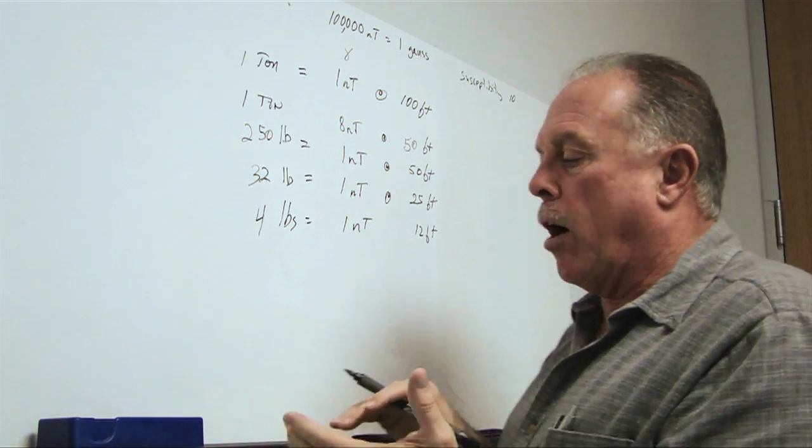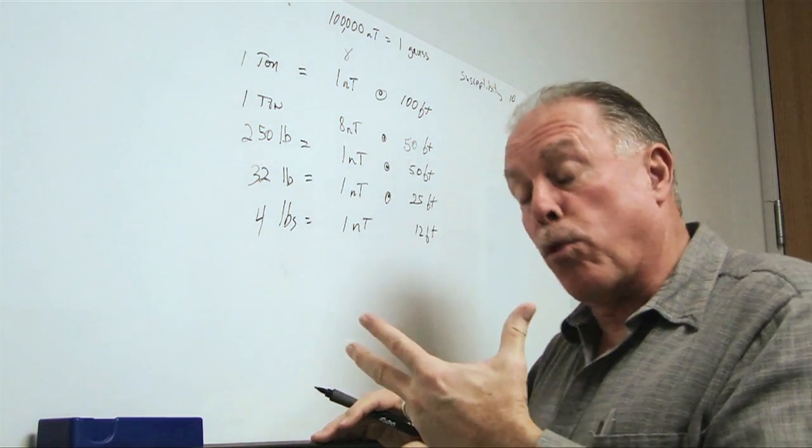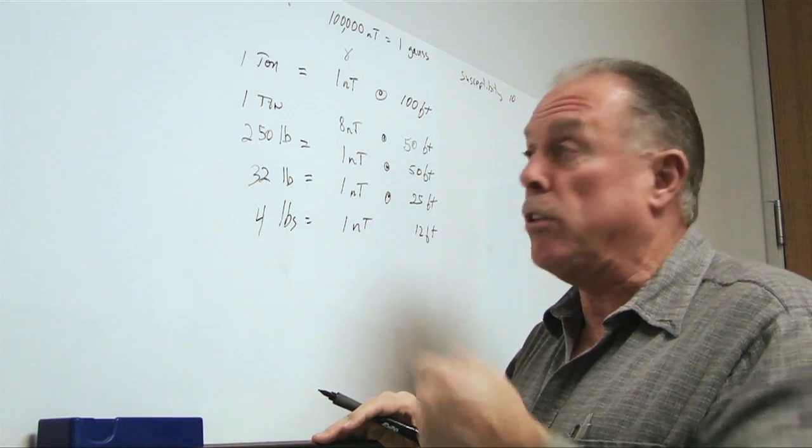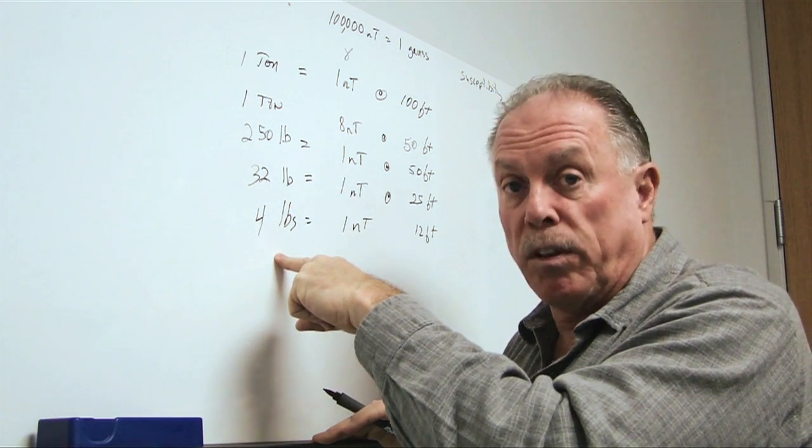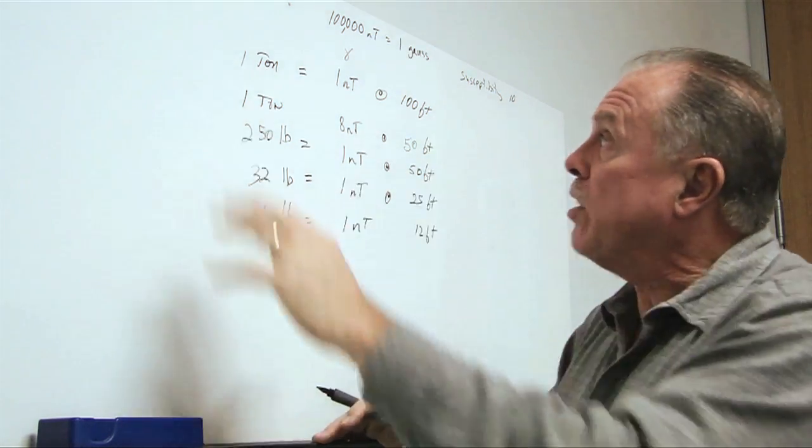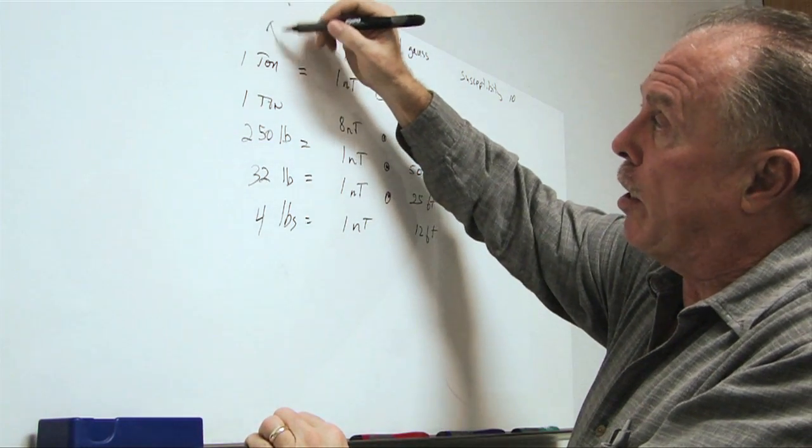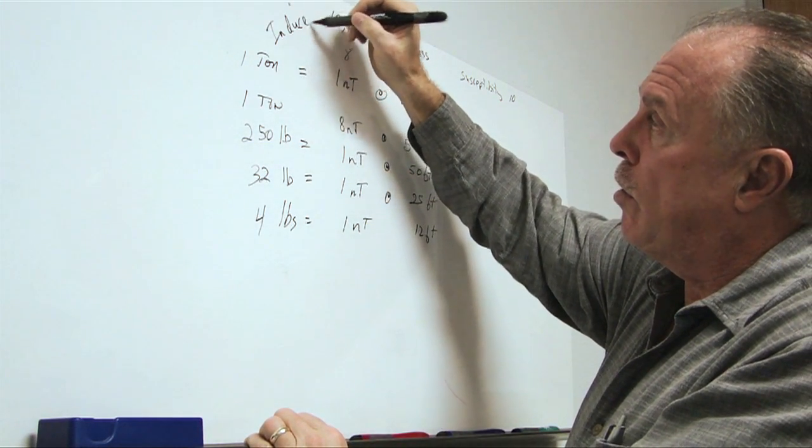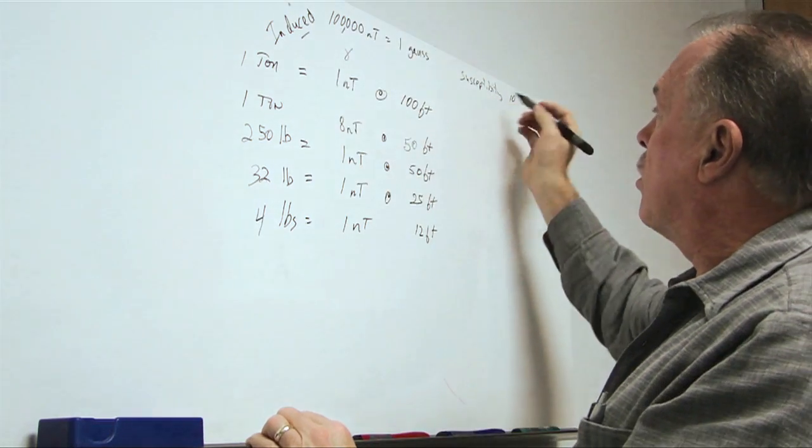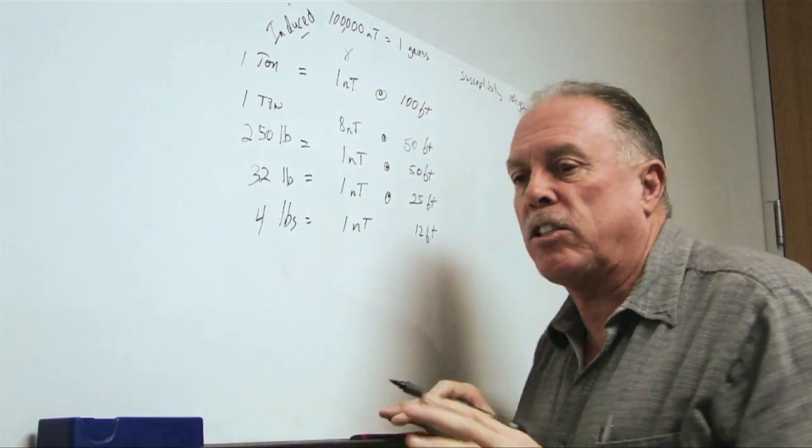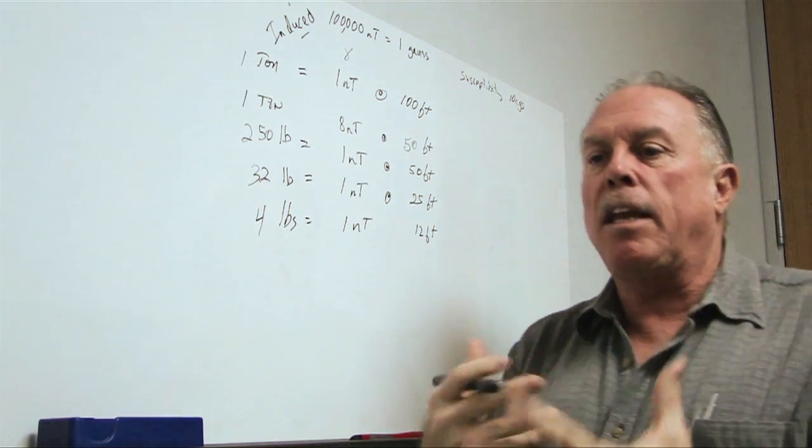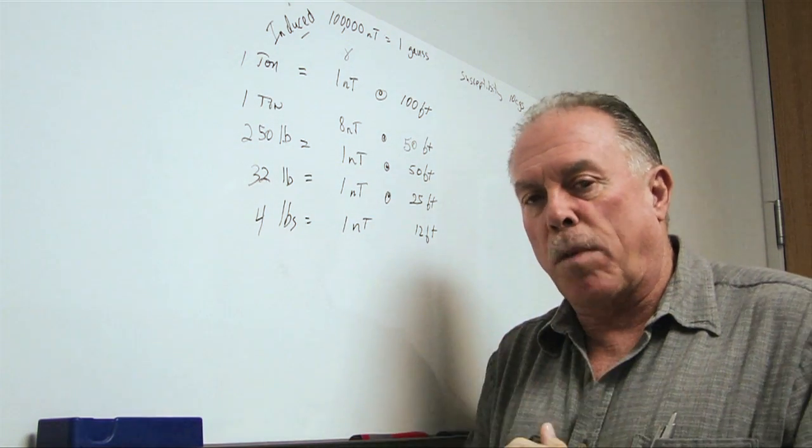Now, I want to talk about some things that actually improve our ability to detect these sizes. Because you remember that I talked about induced fields. So, all of this is all based on induced fields with a susceptibility of 10 CGS.